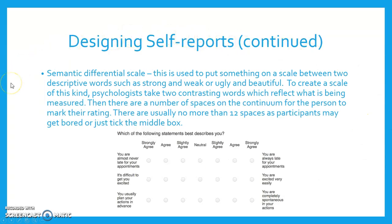Semantic differential scales: this is used to put something on a scale between two descriptive words such as strong and weak, or ugly and beautiful. To create a scale of this kind, psychologists take two contrasting words which reflect what is being measured. Then there are a number of spaces on the continuum for the person to mark their rating. There are usually no more than 12 spaces as participants may get bored or just tick the middle box. Here is an example of that if you want to pause the video and have a look.